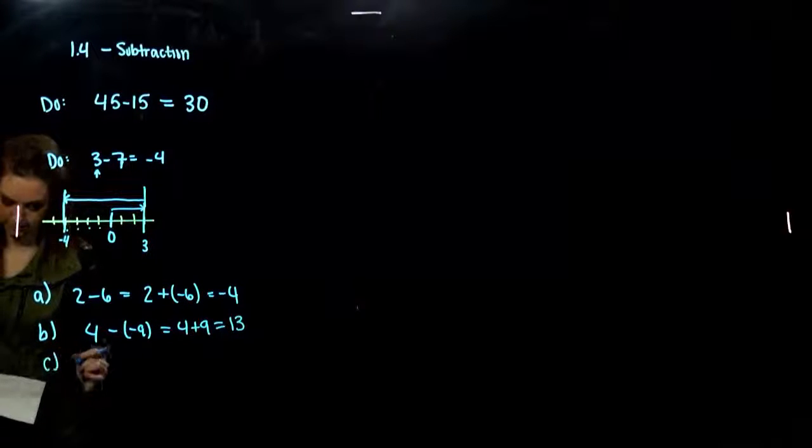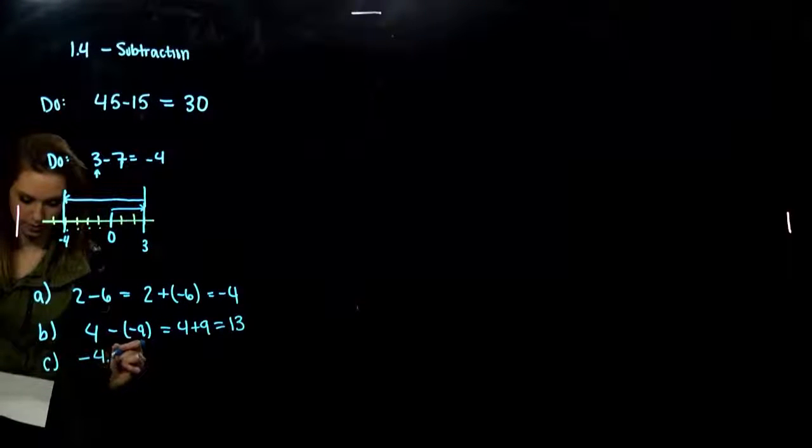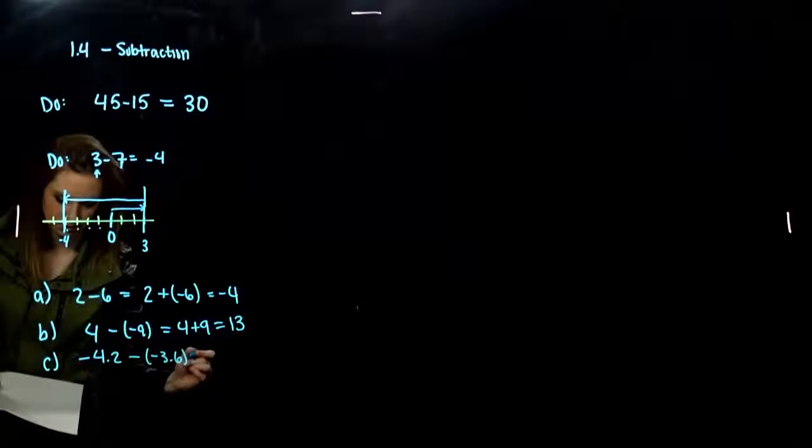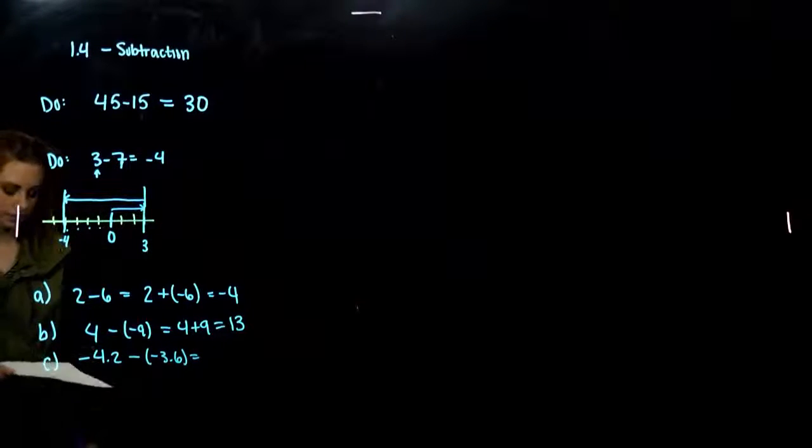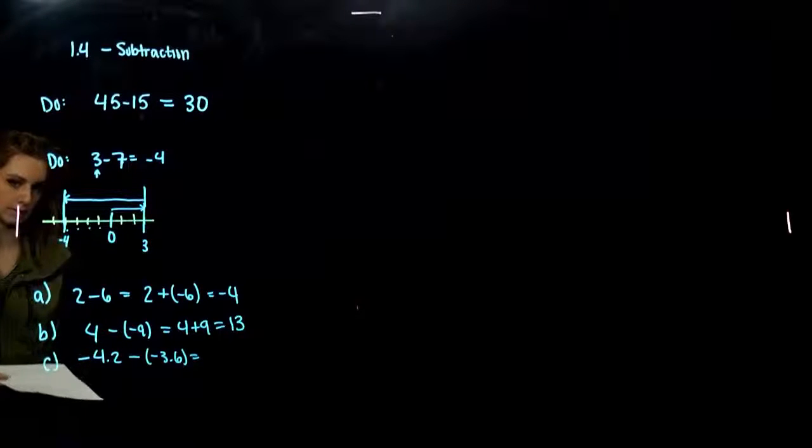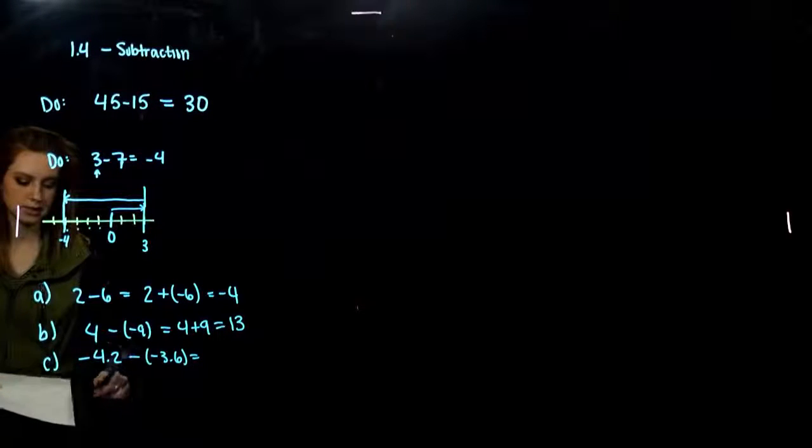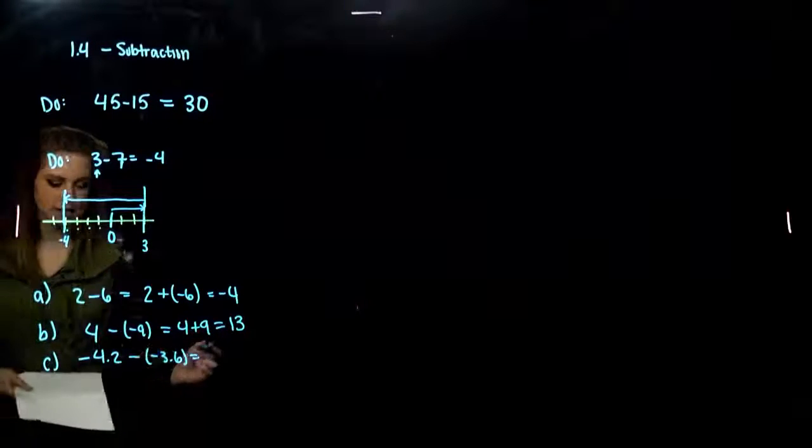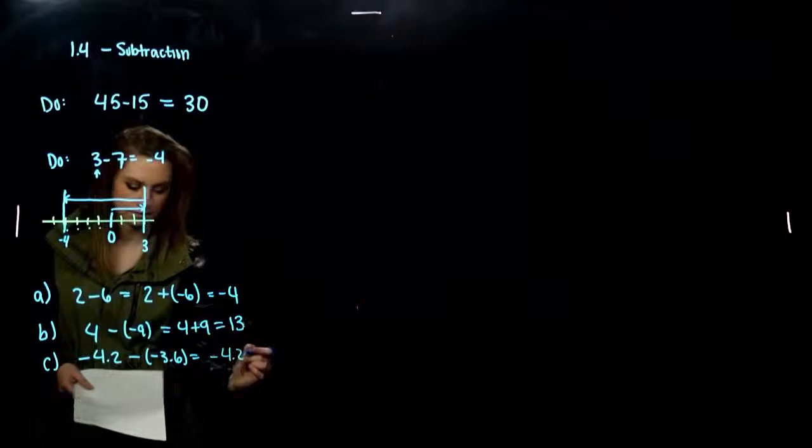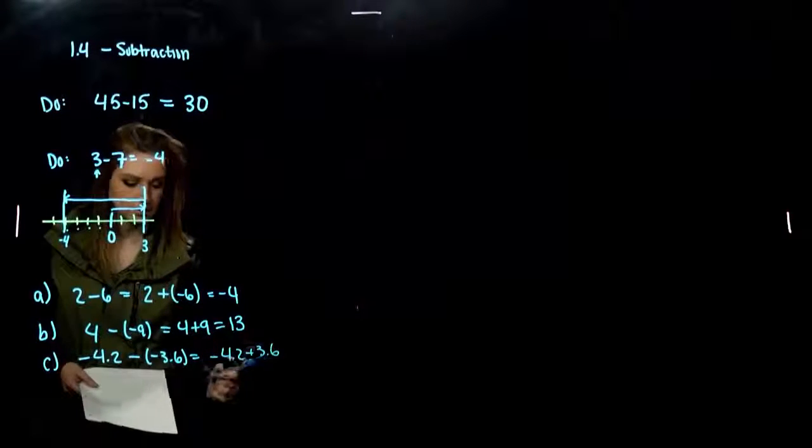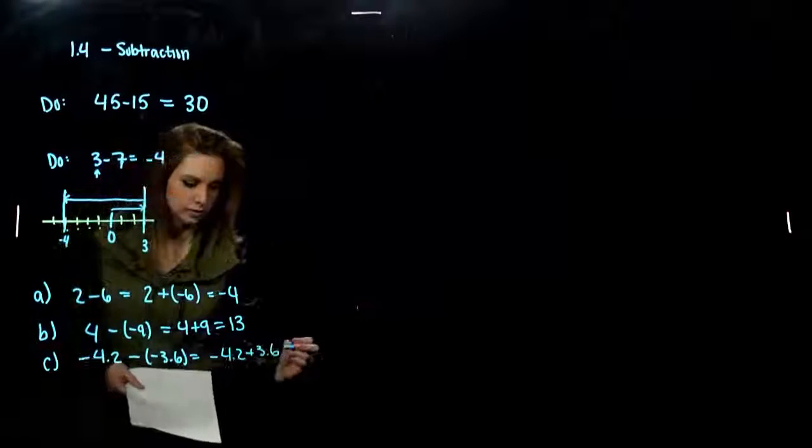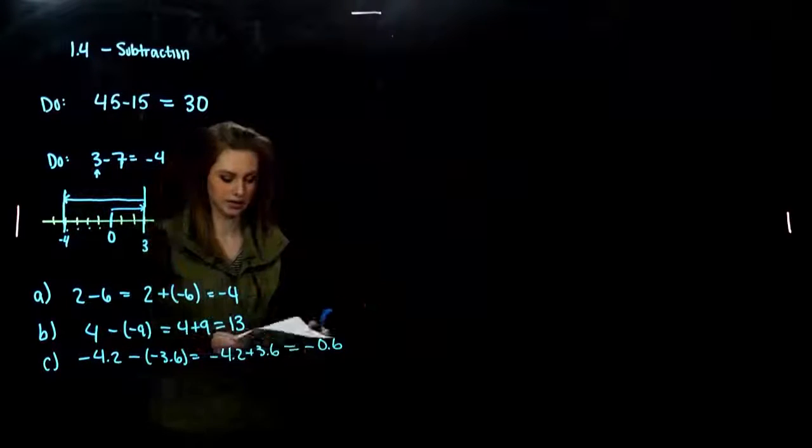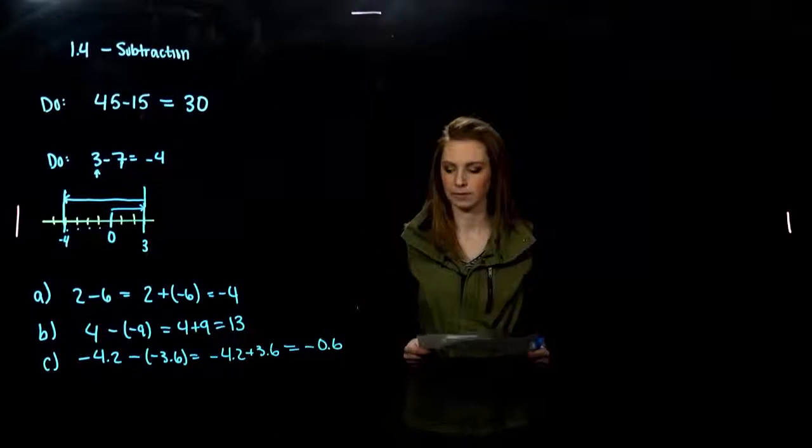And, last. Negative 4.2 minus negative 3.6. So, is our answer going to be positive or negative in the end? It's going to be negative because 4.2 is bigger than 3.6. Because, what happens here? Minus a minus becomes a plus. And, the difference between those two is 0.6. And, the negative has a larger absolute value.